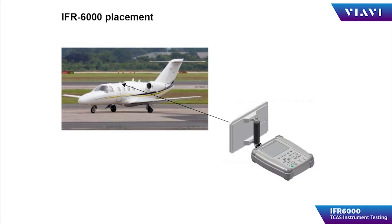A location for the IFR 6000 should be chosen so that there are no metallic obstructions between the IFR 6000 and the aircraft TCAS antenna. The TCAS antenna should be in clear view of the operator's IFR 6000 flat plate antenna. Be aware of any hangar walls, toolboxes, or other aircraft near the aircraft you are testing, as these can cause reflections and multipath interference while testing.